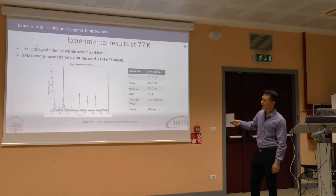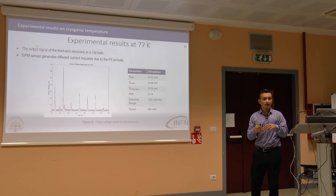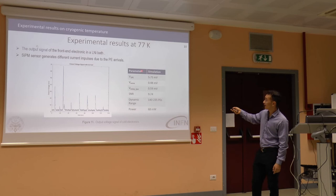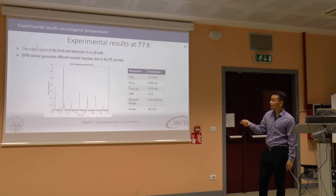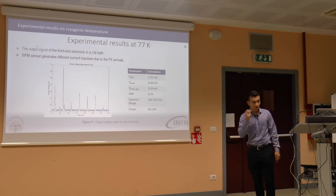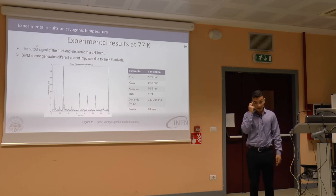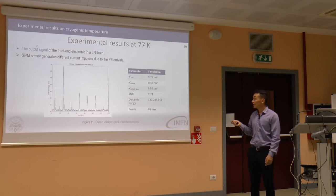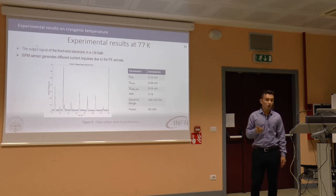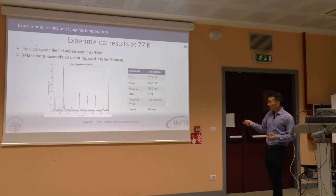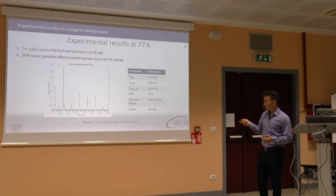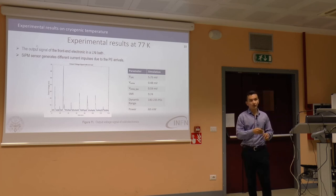Here, the output signal shows different amplitudes because the number of photoelectrons incident on the sensor varied. The key parameters for one photoelectron are the signal-to-noise ratio and dynamic range. The minimum requirement is a signal-to-noise ratio of eight to have a four-sigma resolution. The dynamic range is 140 or 335 photoelectrons, depending on the bias of the sensor.